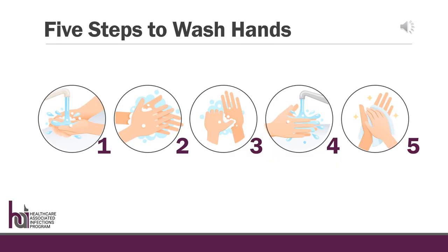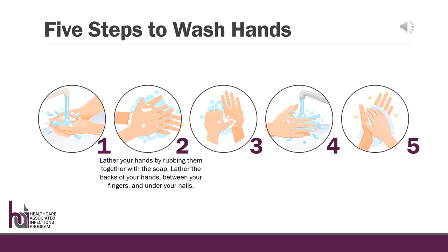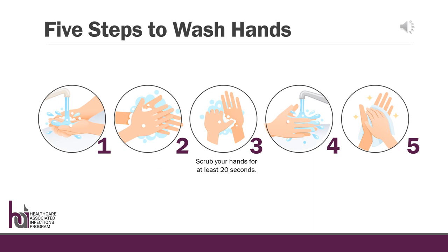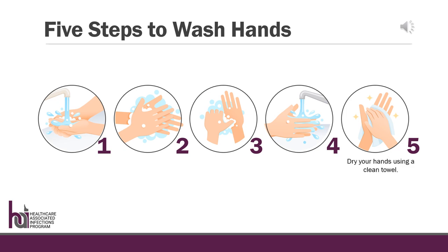The CDC recommends following these five steps for effective hand washing. Wet your hands with clean, running water, warm or cold, turn off the tap and apply soap. Lather your hands by rubbing them together with the soap — lather the backs of your hands, between your fingers, and under your nails. Scrub your hands for at least 20 seconds. Rinse your hands well under clean, running water. And lastly, dry your hands using a clean towel.